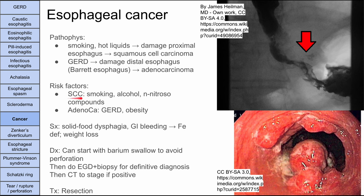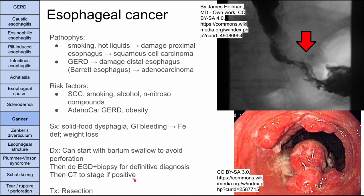Risk factors for squamous cell carcinoma include smoking, alcohol, and nitroso compounds. For adenocarcinoma, GERD and obesity are the main risk factors. Symptoms for both include solid food dysphagia, GI bleeding, iron deficiency, and weight loss. Diagnosis starts with a barium swallow — to avoid accidentally perforating the tumor — followed by EGD and biopsy for definitive diagnosis. CT is then done to stage the cancer and look for metastases. Treatment is resection.